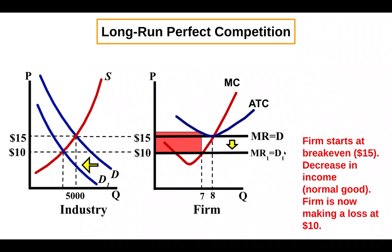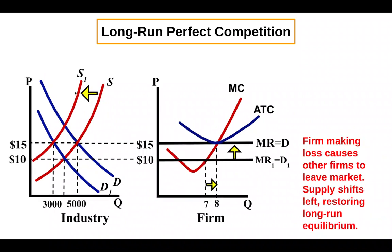Another example: let's say this firm starts in long-run equilibrium at break even, and then there's a decrease in demand — maybe a decrease in income for a normal good. Demand shifts to the left, price falls, and now the firm is taking a loss because the price of ten dollars is below minimum average total cost. In the long run, because the firm is taking a loss, other firms are going to leave and supply shifts left.